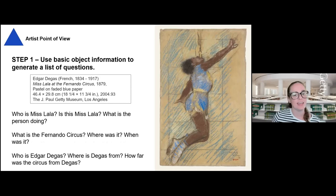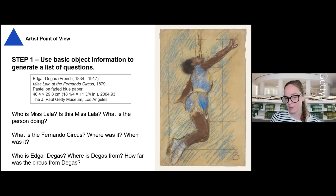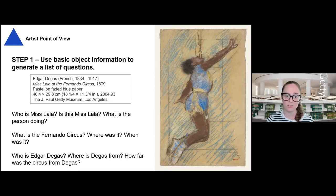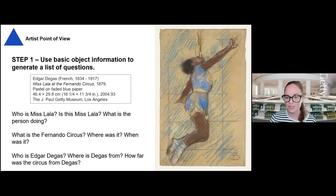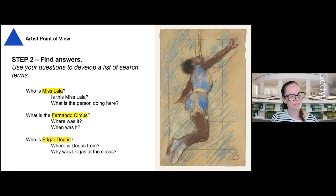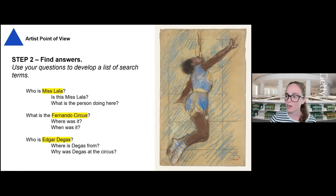Let's say we don't know anything about this piece. A good place to start is to look at basic information about that object — for example, a gallery label has a lot of information we can gather. With more information, you'll probably come up with more questions. To begin the research process, maybe you could have students generate a list of questions when they are looking at the label — questions like, who is Miss Lala? Is this her? What is this person doing? What is the Fernando circus? And who is Edgar Degas anyway, and where is he from? Once you generate a list of questions, it's time to start finding those answers. You could highlight search terms from your questions — Miss Lala, Fernando circus, and Edgar Degas.